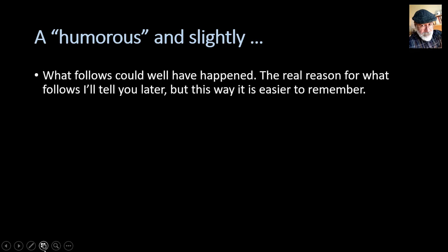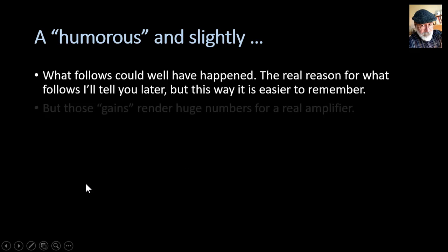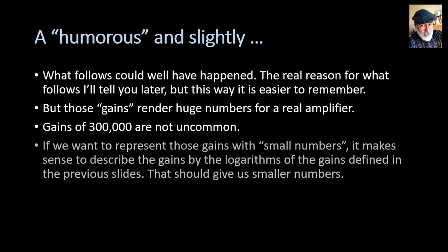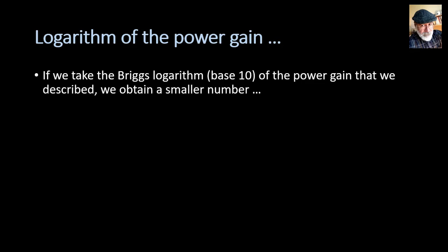Those definitions are fine, but they usually give us a very large set of numbers. Those gains render huge numbers for real amplifiers — gains of 300,000 are not uncommon. If we want to represent those gains with smaller numbers, it makes sense to describe the gains by the logarithms of the gains we've defined. That should give us small numbers. Let's begin with the power gain: the logarithm of the power gain. We take the base-10 logarithm of the power gain.